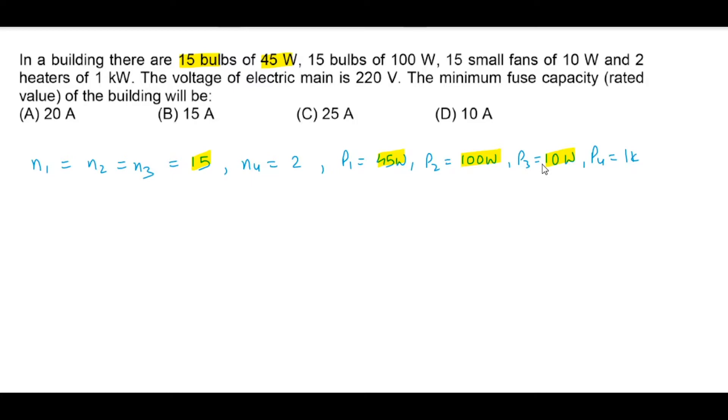And 2 heaters of 1 Kilowatt. So we have 2 heaters as well, each power is 1 Kilowatt or 1000 Watt. The voltage of electric main is 220 V. So the total main voltage for the building is 220 V.